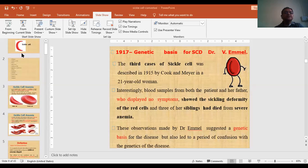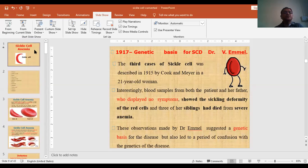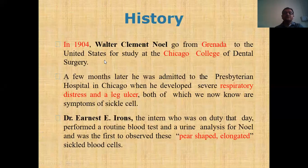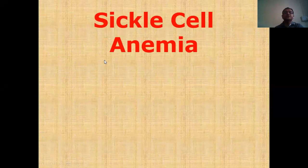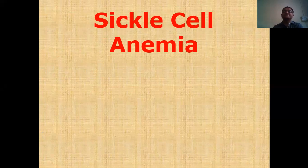I am going to give you a lecture on sickle cell anemia, so you understand what sickle cell anemia is and why it occurs, as well as what the causes are. Sickle cell anemia is a type of anemia — when there is a deficiency of hemoglobin, the condition is known as anemia.